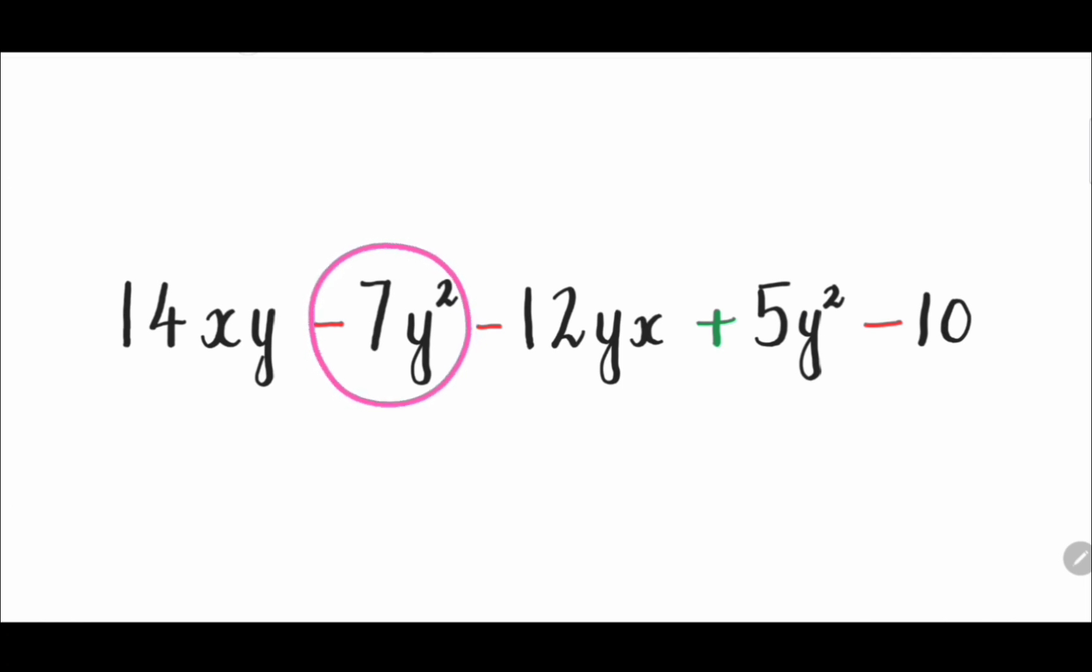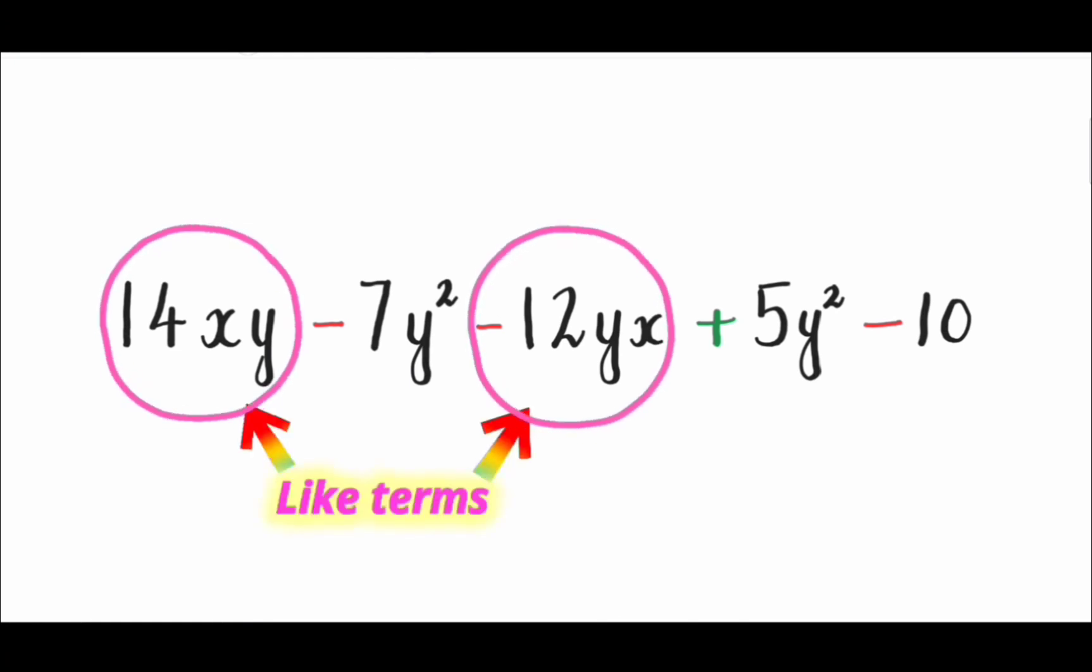Consider another example. In the expression 14xy - 7y² - 12yx + 5y² - 10, the terms -7y² and 5y² are like terms. Also, 14xy and -12yx are like terms.